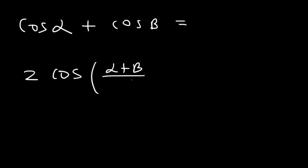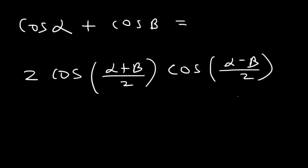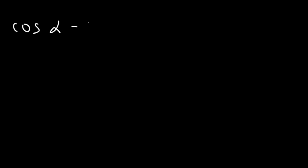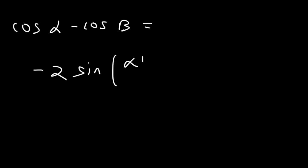Now the last one: cosine alpha minus cosine beta. That's equal to negative 2 — it's a little different than the last ones — negative 2 sine((alpha plus beta)/2) times sine((alpha minus beta)/2). So those are the four formulas that you need to know.